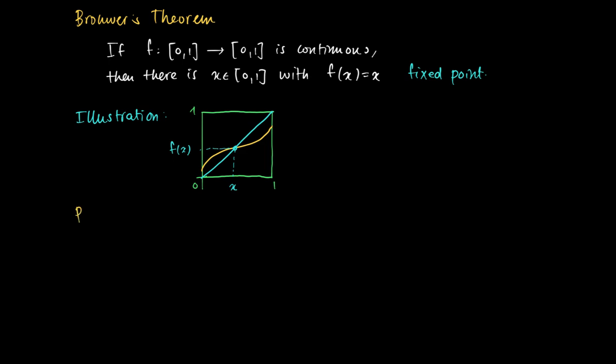Well, this is quite an astonishing result. It can be proved as follows. We define a help function. The help function g of x equals x minus f of x. We do so for all x's in [0,1], the closed interval [0,1].